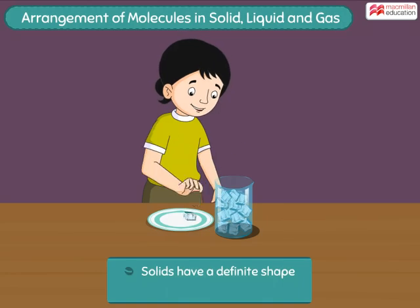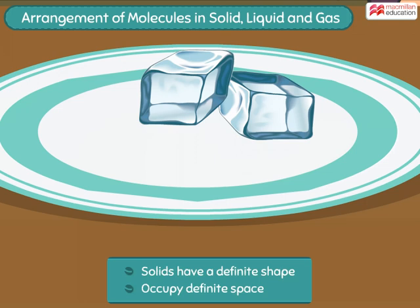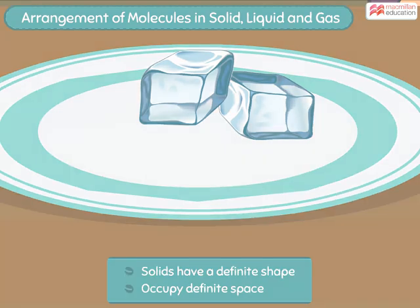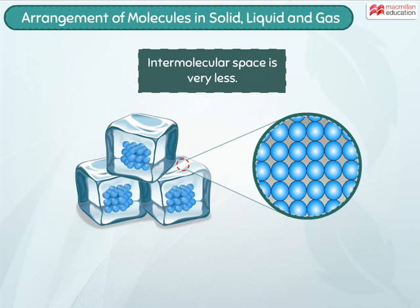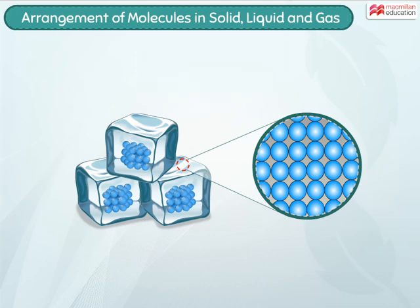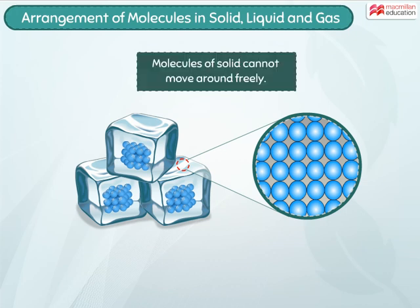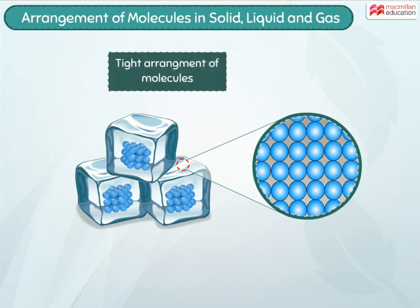Solids have a definite shape and occupy a definite space. The molecules of a solid substance are packed together very tightly, meaning that the intermolecular space between the molecules is very less. As the space around each molecule is very less, molecules of a solid cannot move around freely. Thus, the tight arrangement of molecules in a solid substance gives a solid its definite shape.